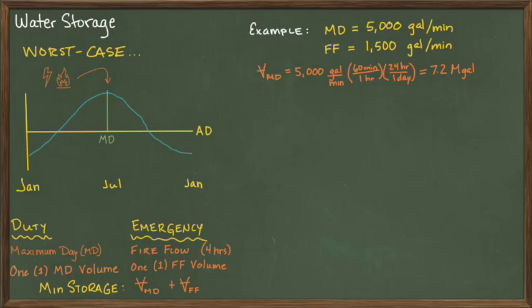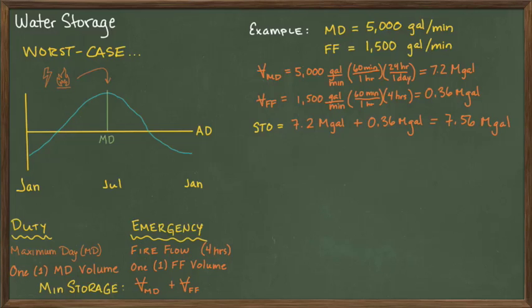Next, we do the calculation for the fire flow volume, which is the same as the max day demand. But the difference is that instead of 24 hours, you multiply by only 4 hours. And this yields a storage of 0.36 million gallons. So for this exercise, the storage is 7.2 million gallons plus 0.36 million gallons to get a total of 7.56 million gallons.